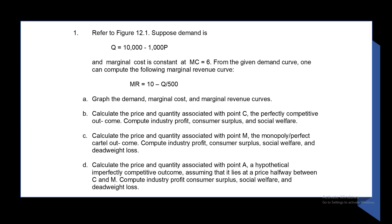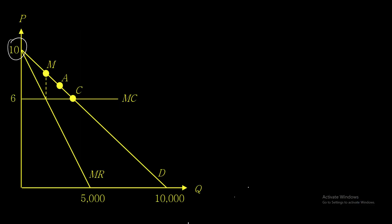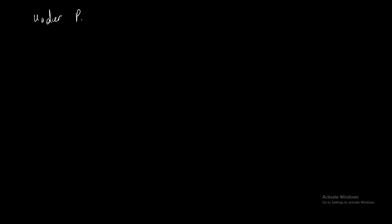Part B: calculate the price and quantity associated with point C, the perfectly competitive outcome. Compute industry profit, consumer surplus, and social welfare. Under perfect competition, we will set price equal to marginal cost, which is equal to $6.